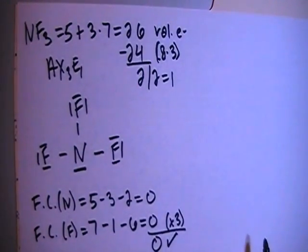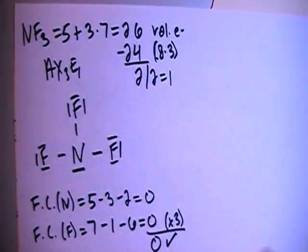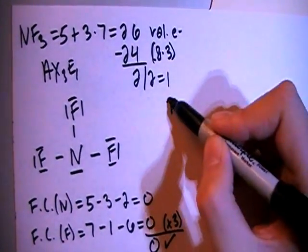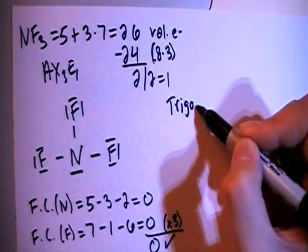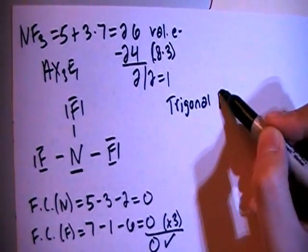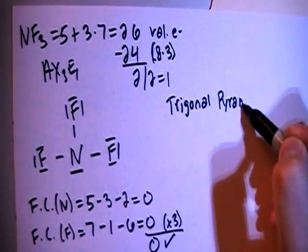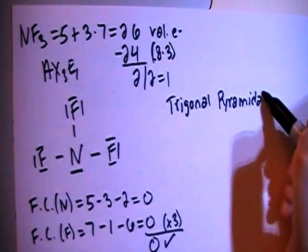Now, in terms of shape, when we have AX3E1, that means this is going to be a trigonal pyramidal shape, okay?